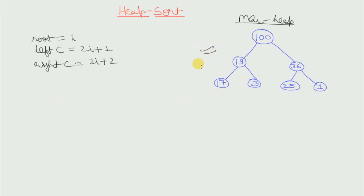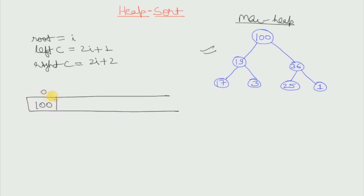So how will this max heap be stored in our array? If we create an array then 100 will be stored as root and its index will be 0. Its left child will be stored at 2i plus 1, that means 2 into 0 plus 1, which is index 1, so 19 will be stored there. The right child of 100, that is 36, will be stored at 2 into 0 plus 2, which is index 2.